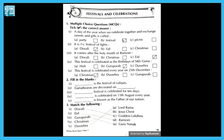First one: a day of the year when we celebrate together and exchange sweets and gifts is called what? Saal ka aisa din jab hum celebrate karte hain aur sweets and gifts exchange karte hain, ek doosre ko dete hain — us ko hum kya kehte hain? Options are: a) party, b) festival, or c) picnic.